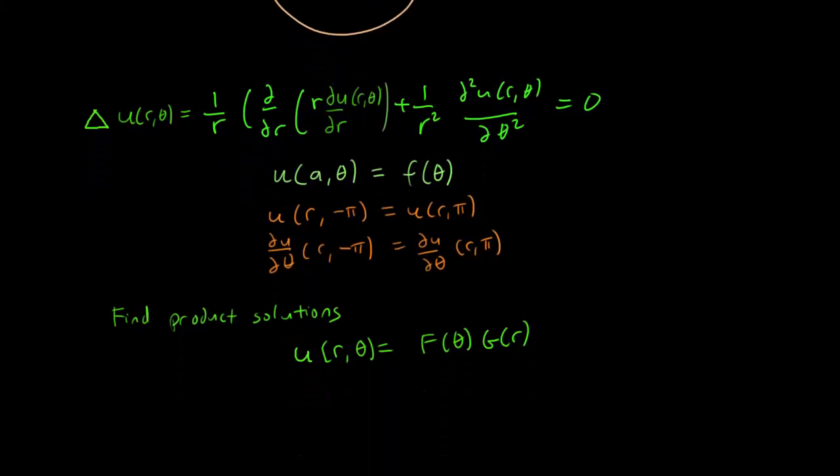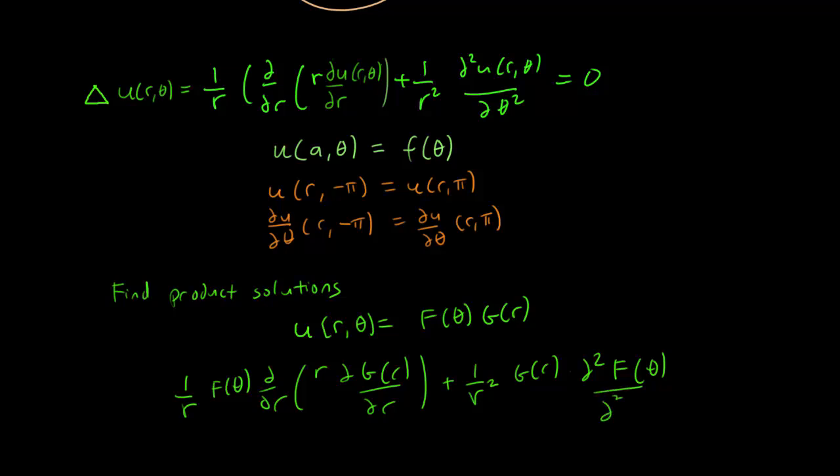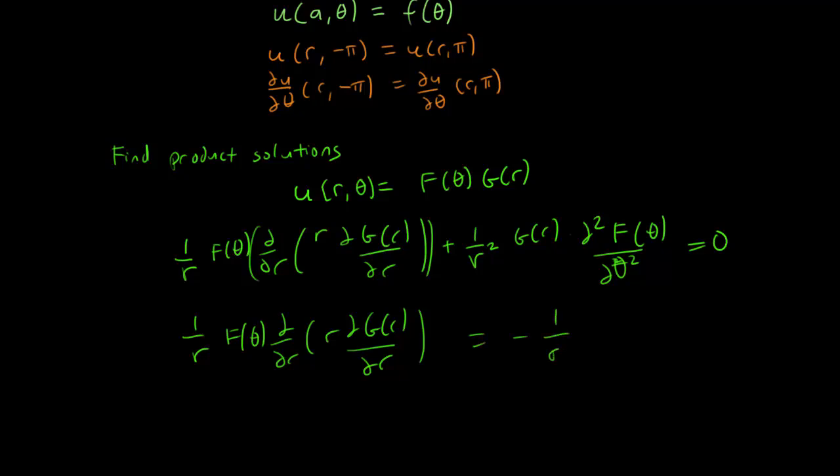It should not be surprising to learn that the same technique works. We start by finding the product solution. We write down u(r,theta) equals f(theta) g(r). When you plug it in to the Laplace equation, this looks a little bit nastier than the case for xy coordinates, but it's not too different. We have 1 over r, r times partial g r over partial r plus 1 over r squared. We take the gr term out now and we take the second derivative of f theta with respect to theta squared.